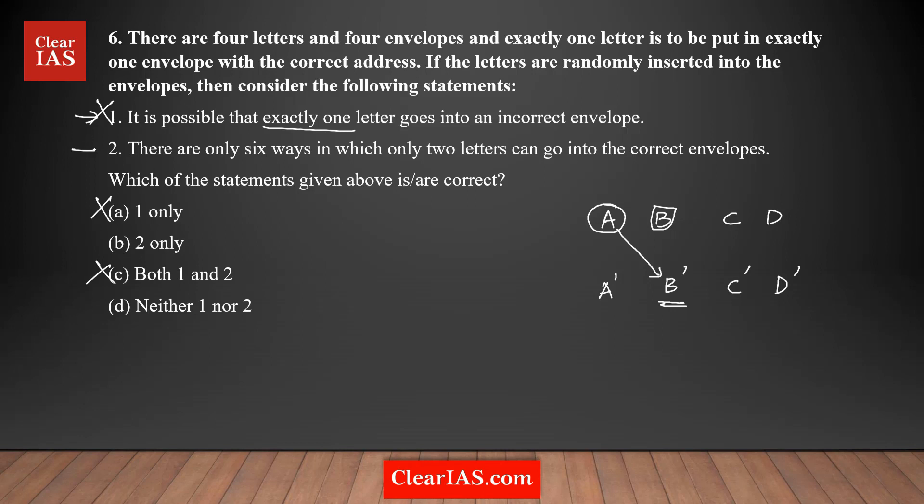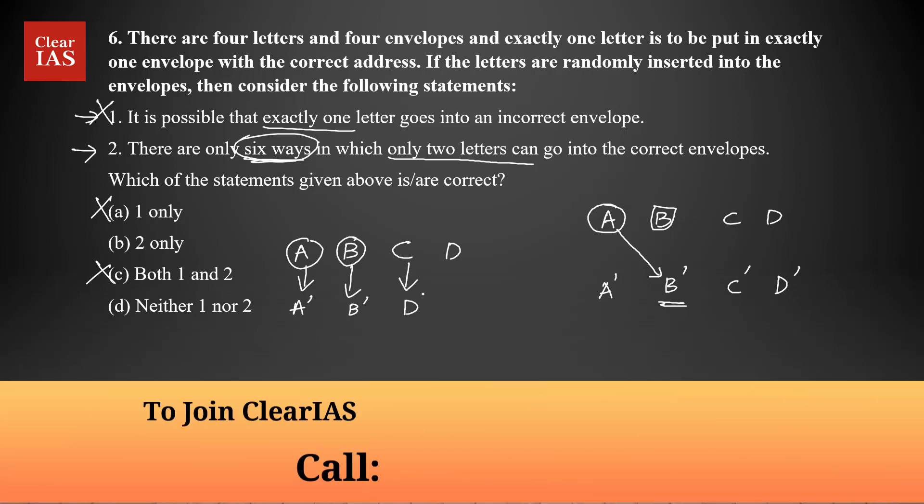Now let's analyze statement two. Statement two is saying that there are only six ways in which only two letters can go into correct envelopes. So let's take a scenario here. Only two letters can go into the correct envelope. Let's say A and B are going to the correct envelope. So that means A is going to A dash and B is going to B dash, right? These two are going to the correct envelope. That means other two letters C and D are going to the incorrect one. So C is going to D dash and D is going to C dash. It's possible.